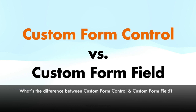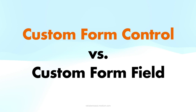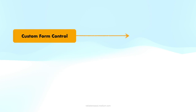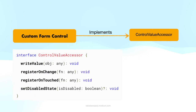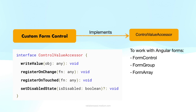What's the difference between custom form control and custom form field in Angular? In Angular, custom form control and custom form fields are related concepts, but they serve different purposes. A custom form control is a component that implements the ControlValueAccessor interface. This interface allows the component to work with Angular forms and interact with form APIs such as FormControl, FormGroup, and FormArray. Custom form controls are used to create reusable input components that are not available out of the box in Angular Material or other UI libraries.